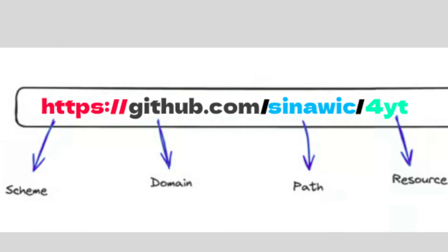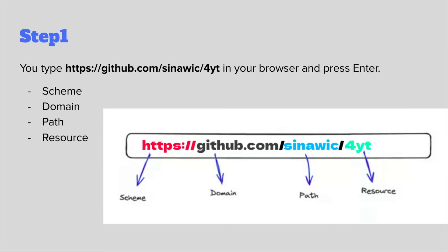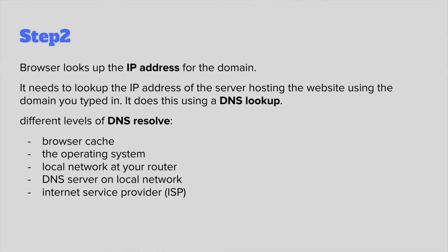A URL can have multiple parts, each with individual meanings: the scheme, the domain, the path, and the resource being requested. The browser must determine which internet server to connect to, so it looks up the IP address for the domain name using a DNS lookup. This can happen at different levels: browser cache, the operating system, the local network at your router, a DNS server on a local network, and the internet service provider. If the browser cannot find the IP address at any of those layers, the DNS server does a recursive DNS lookup, asking multiple DNS servers around the internet until the record is found.